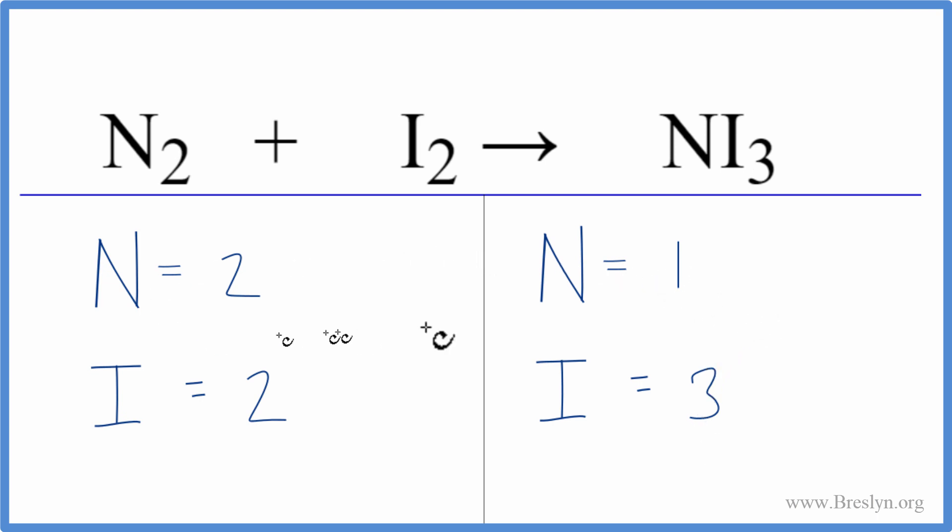Let's balance the nitrogens first by putting a two in front of the NI3. So we have one times two, that gives us two nitrogens. Those are balanced.